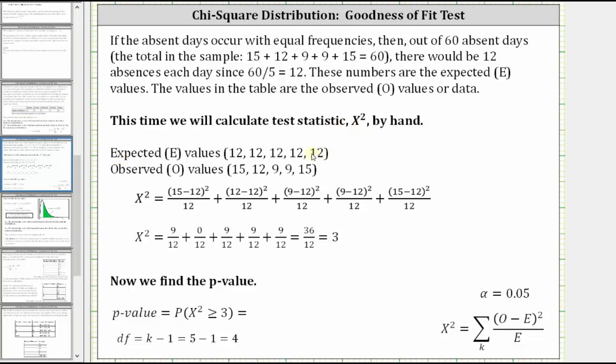Using the formula shown here below for chi-square, again each term is in the form of the square of O minus E divided by E. So the first fraction here is the square of 15 minus 12 divided by 12. The second fraction is the square of 12 minus 12 divided by 12. The third fraction is the square of 9 minus 12 divided by 12. The fourth fraction,